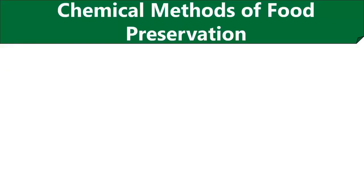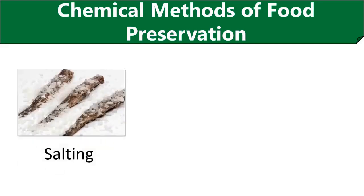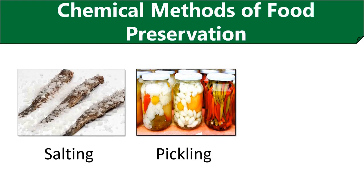The first chemical method is salting, which uses salt to remove moisture from food, since moisture favors microbial growth. Dry curing applies dry salt to foods like fish and meat, while wet curing uses a salt or brine solution to increase the longevity of vegetables. Pickling uses natural preservatives like salt, edible oil, sugar, and spices for fermentation of vegetables, and uses chemical preservatives like EDTA for chemical pickling.